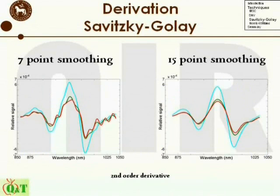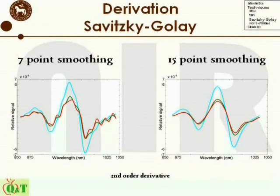An example for an estimate of the second-order derivative can be seen here, where two different numbers of smoothing points have been used. In the first case, where the number of smoothing points is seven, the resulting estimate of the derivative oscillates. While if the number of smoothing points is increased to 15, a nice and smooth derivative is estimated.